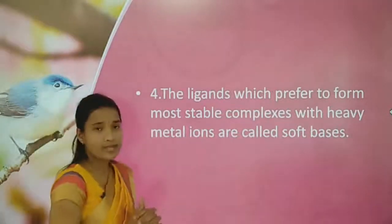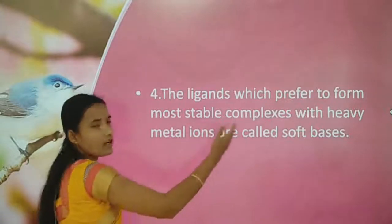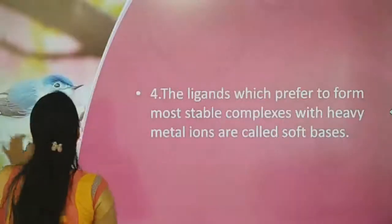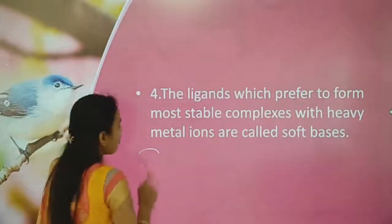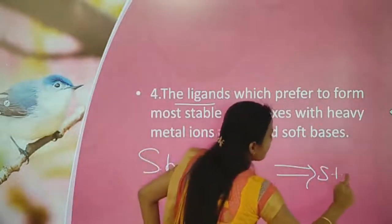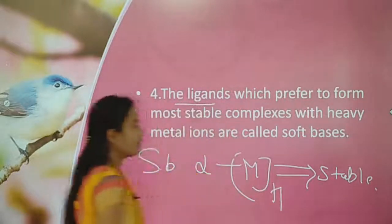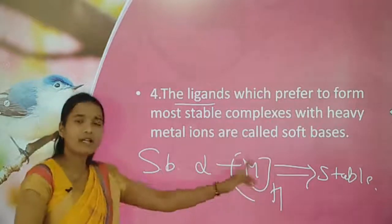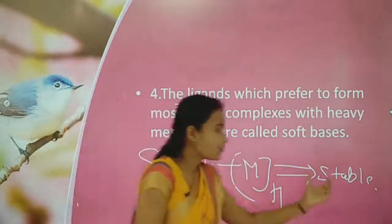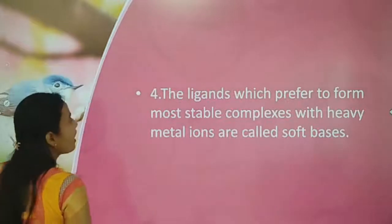Soft bases are the ligands which prefer to bond, or the ligands which prefer to form the most stable complexes with heavy metal ions. So soft bases form their most stable compounds when reacting with heavy metal ions.